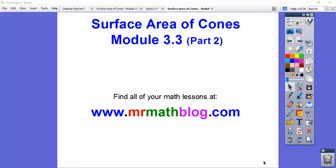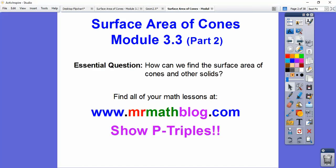Alright you guys, surface area of cones. This one is real similar to surface area of pyramids. Remember the lateral area is one half PL, the perimeter. Well the perimeter of a cone is a circle, so it's a circumference. So it's one half your circumference formula still times your slant height. So our question is how can we find the surface area of cones and other solids?